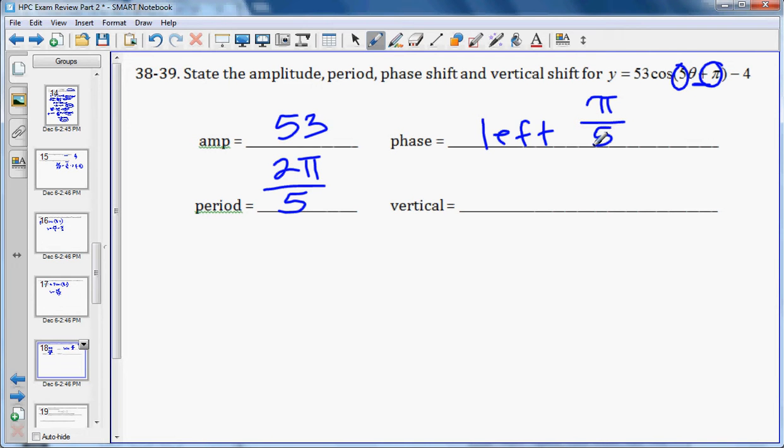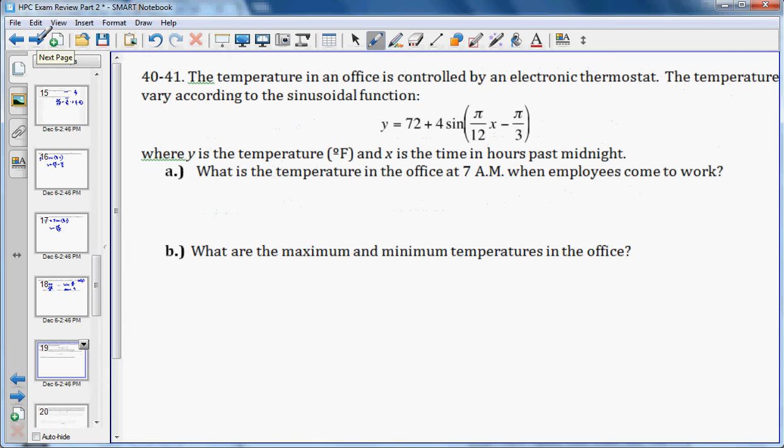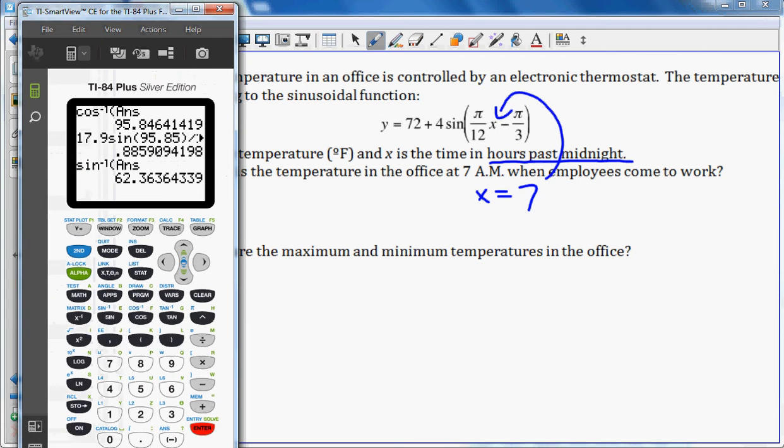Now, we're told the temperature in an office is controlled by an electronic thermostat, and the temperature varies sinusoidally according to this function. What is the temperature of the office at 7 a.m.? We notice it's hours past midnight, so 7 a.m. would mean x equals 7. So we're just going to plug this into this equation. 72 plus 4 sine of π over 12 times 4 minus π over 3. There's one thing I have wrong here. I'm still in degree mode, and I need to be in radian mode. So let's change the mode to radian.